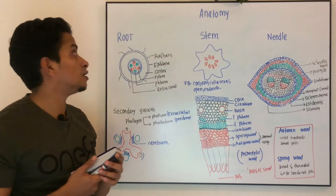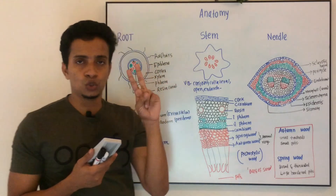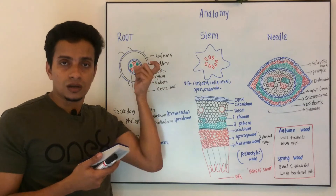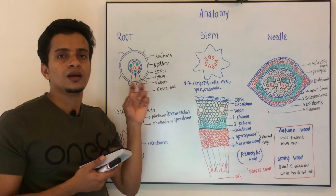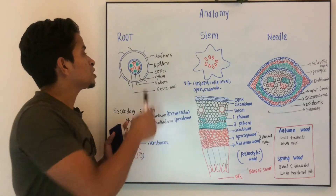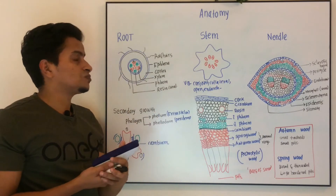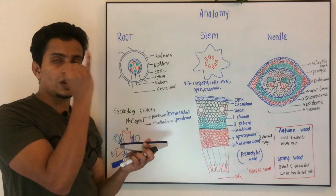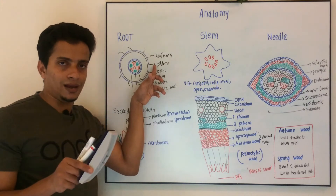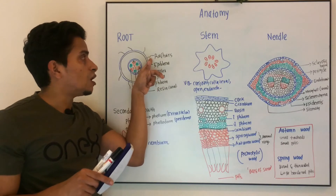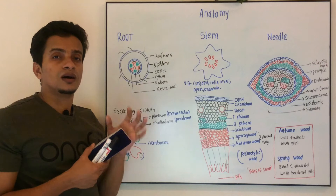We will start with the root. The internal anatomy of the root can be divided into two parts because in this species you can expect secondary growth. First, the internal anatomy of the young root. In the young root, anatomically it is divided into epidermis or epiblemma, cortex, endodermis, pericycle, and stele region. Epiblemma is the outermost layer which has root hairs. This layer may have associations with fungi.